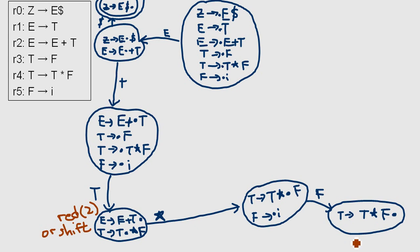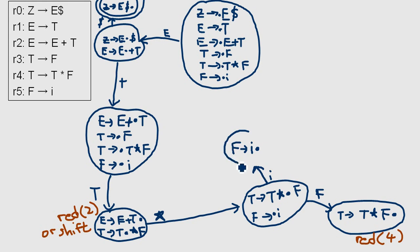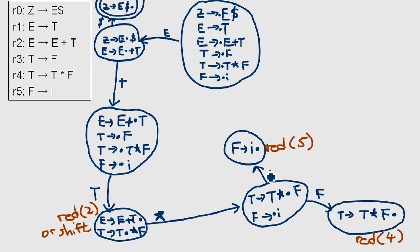We can just reduce this by rule number four. Now let's check what happens if we get an 'i': we end up with another state, and once again we're lucky because there's no other rule, so we can reduce this one. This time we're reducing by rule number five.